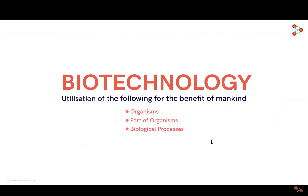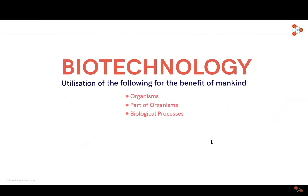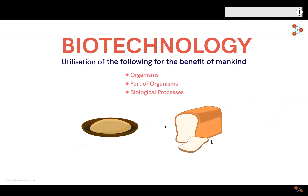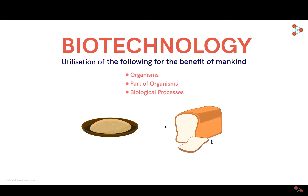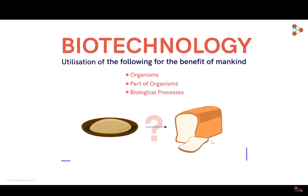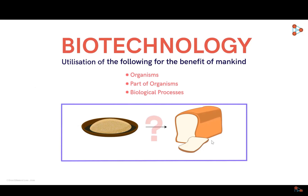Biotechnology is defined as the utilization of organisms or a part of the organism or any biological process for the benefit of mankind. For example, we know how bread is made. The dough is added with organisms like yeast, which help in releasing certain chemicals. The reactions ultimately give us the soft and fluffy loaf on baking. Here we've used the yeast organism to obtain the product of our interest. So does that mean bread making is a part of biotechnology? Well, kind of.